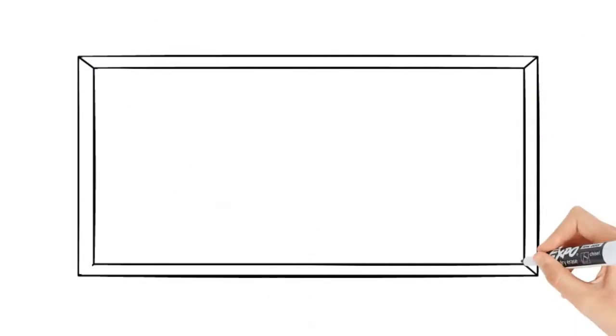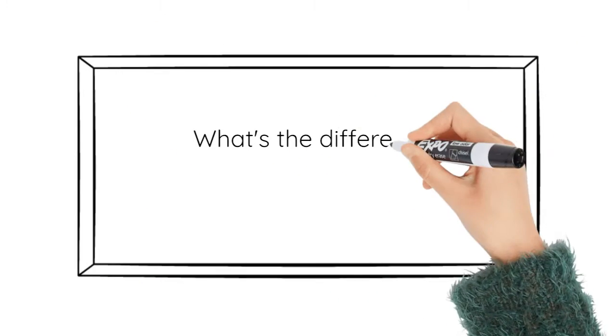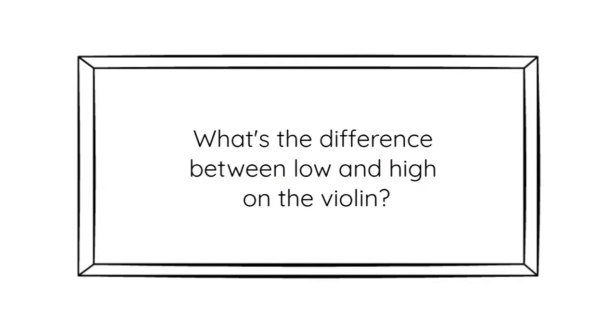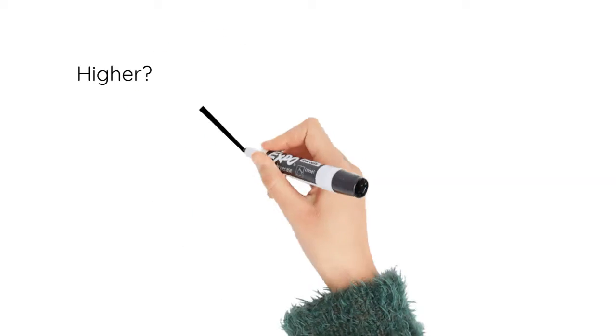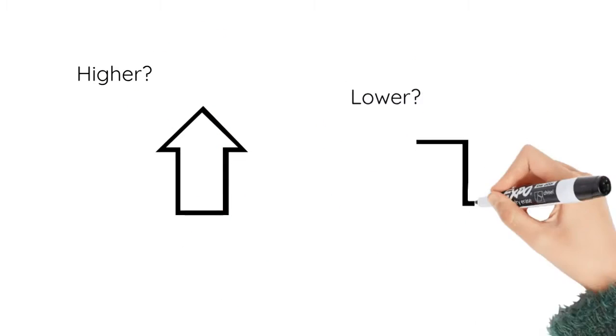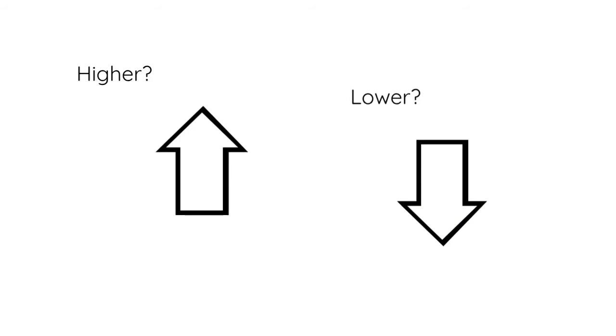When playing notes on the violin, students often get confused about which direction is low and which direction is high. Teachers will often say play higher or move that finger lower without taking the time to explain high and low.